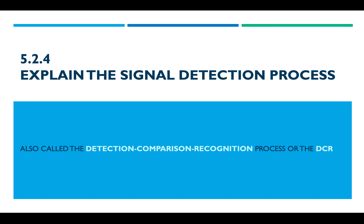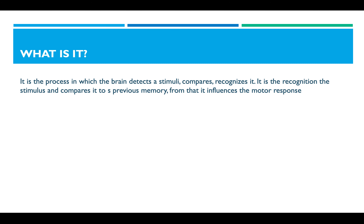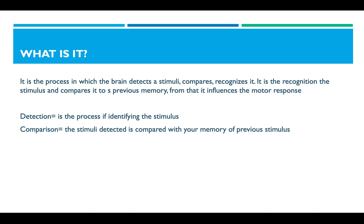I will be explaining 5.2.4: the signal detection process, also called the Detection, Comparison, and Recognition process, or DCR for short. DCR is the process in which the brain detects stimuli, compares and recognizes it with previous memories. Detection is identifying the stimulus; comparison is when the detected stimulus is compared to your memory of previous stimuli; recognition is finding the specific memory that matches the current stimulus.